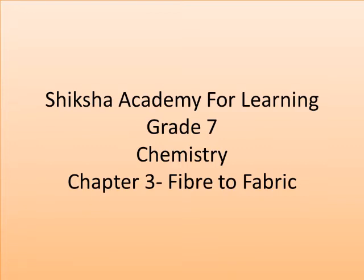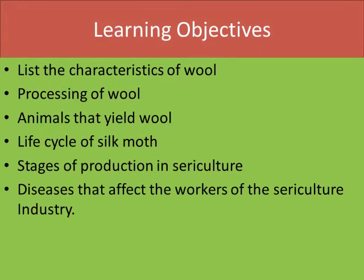Get ready with your notebook, children, to take down some important points while I am explaining, and also keep the textbook ready. Learning Objectives: In this lesson, we are going to learn about the characteristics of wool, processing of wool, that is production of wool, animals that yield wool, life cycle of silk moth, stages of production in sericulture — sericulture means the production of silk and the rearing of silkworms — and the diseases that affect the workers of the sericulture industry.